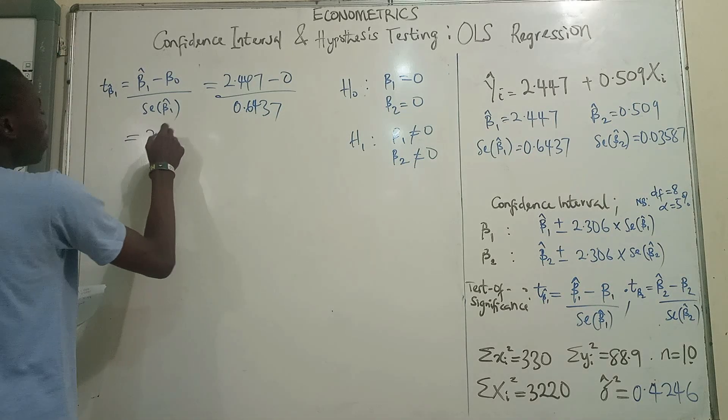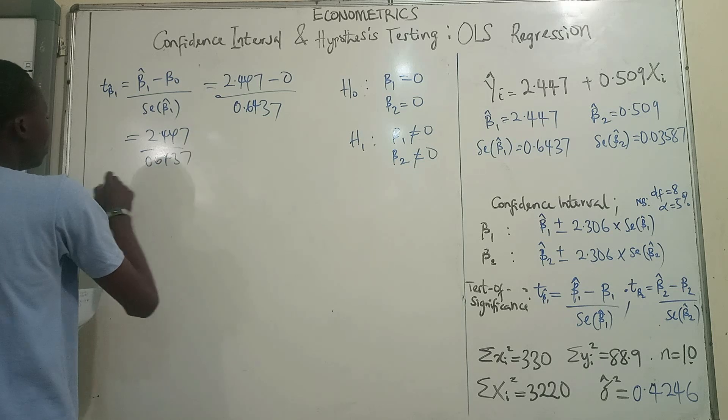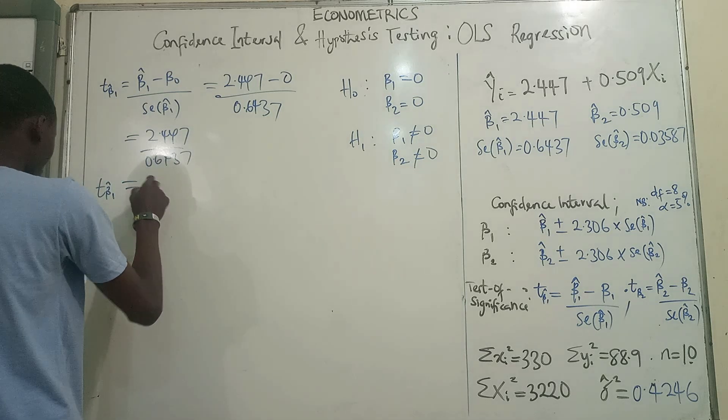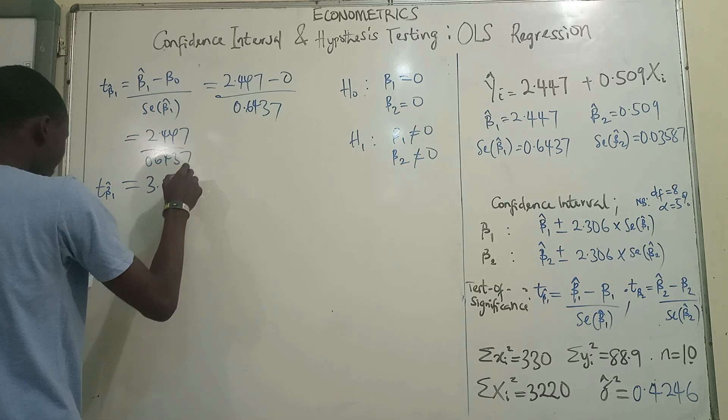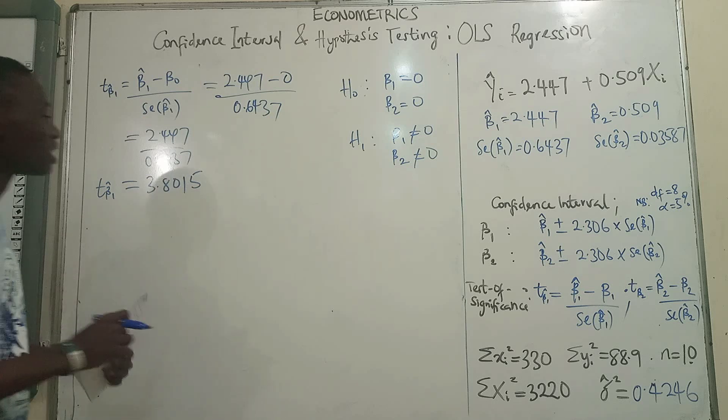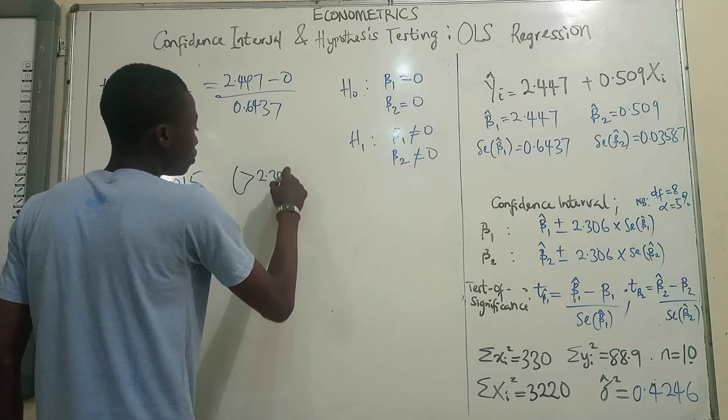Divided by the standard error of beta 1. The standard error of beta 1 is 0.6437. So this will be 2.447 divided by 0.6437. The T statistics for beta 1 is 3.8015. And so we see that this is greater than 2.306.